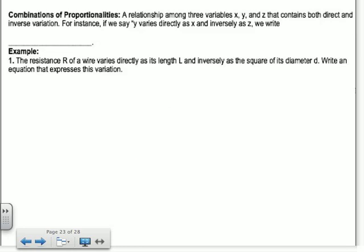Okay, let's do this last one real quick. It's quick. All right, a relationship among three variables, x, y, and z, that contains both direct and inverse variation. So if y varies directly as x, you'd have k times x. And inversely as z, you'd have divided by z. So it could be lots of different combinations of this. So it might say inversely as one and directly as another. So it says the resistance r of a wire varies directly as the length and inversely, so that means it's on the bottom, as the square of its diameter d. So it'd be over d squared. That's how you would write that one. So you're going to have different combinations of those as well.